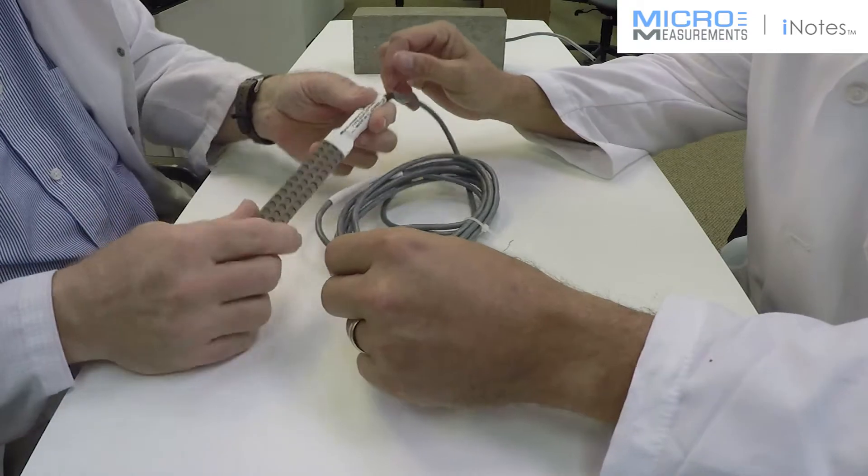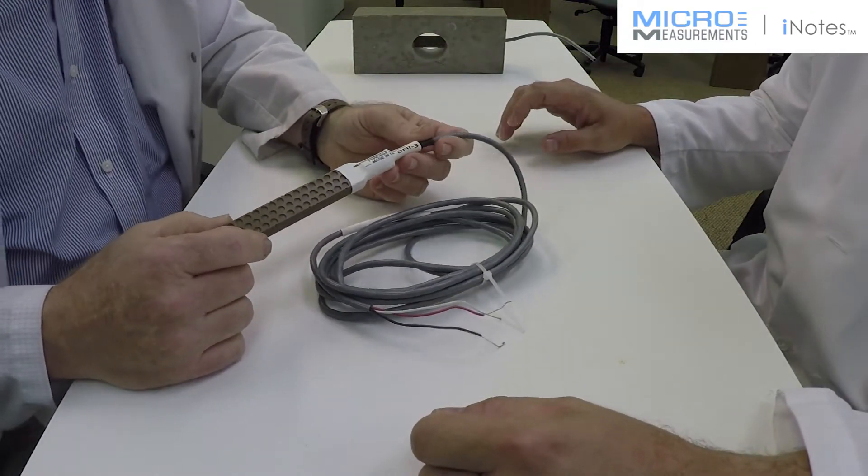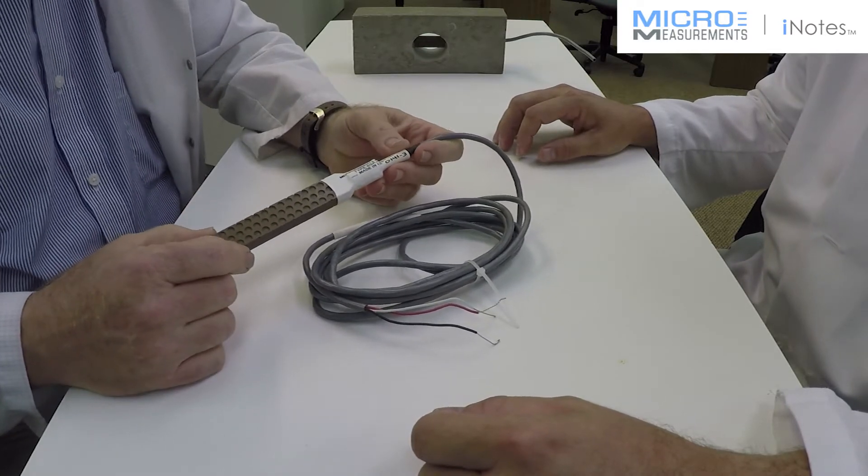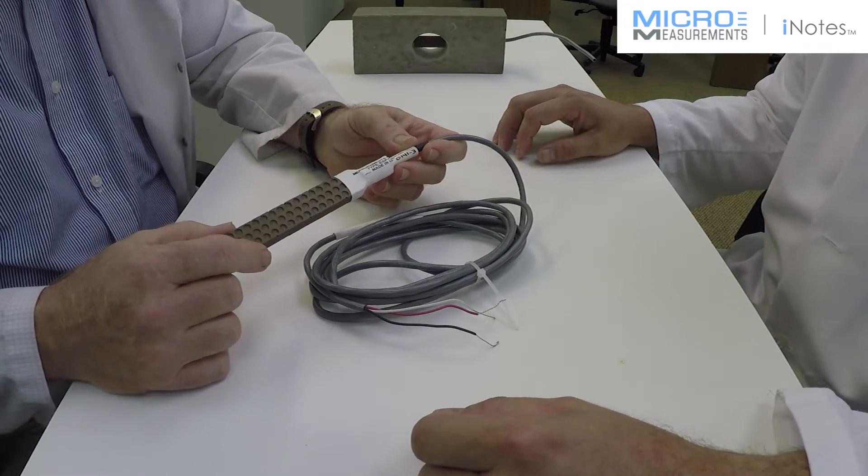Well, Darrell, this is our EGP series of gauges. It's designed for embedment into concrete structures. These days a lot of new structures are called smart structures. They're embedding strain gauges and sensors into them to monitor the health of the structure.